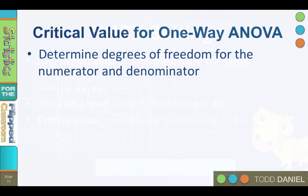Finding the critical value for a one-way ANOVA requires knowing the degrees of freedom for the numerator and the denominator of the F-ratio. These are called the degrees of freedom between, the degrees of freedom within, and the degrees of freedom total.